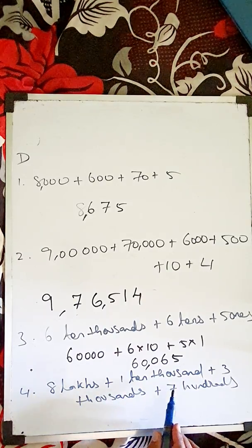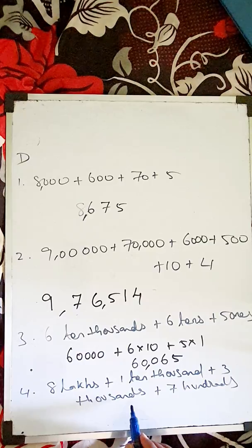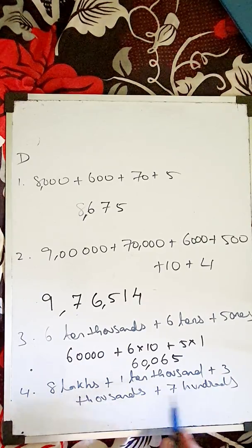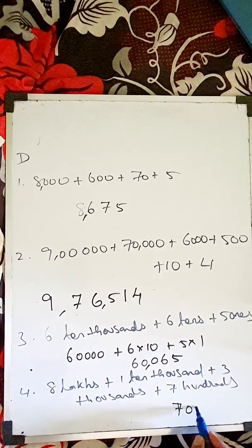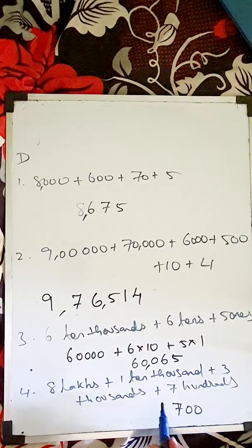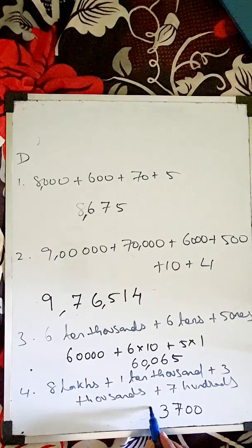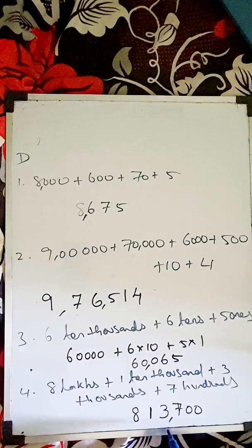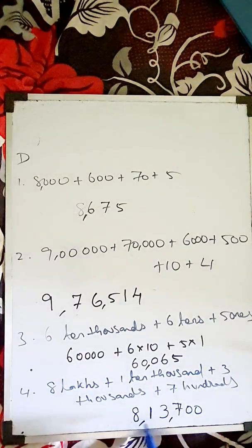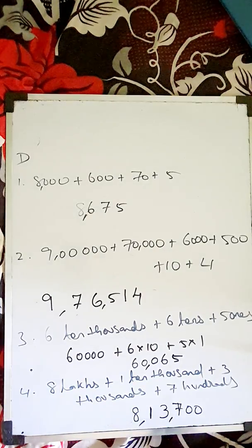Next: eight lakhs, thirteen thousand, seven hundred. Ten is not there, ones not there — put zero for those. Before that, three thousand, and ten thousand gives thirteen thousand. Eight lakhs — three numbers, two numbers. So: eight lakhs thirteen thousand seven hundred: 8,13,700.